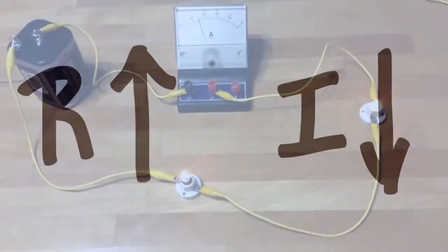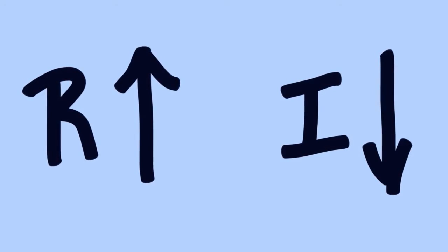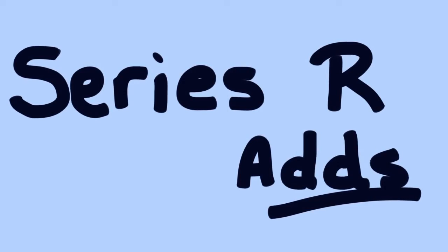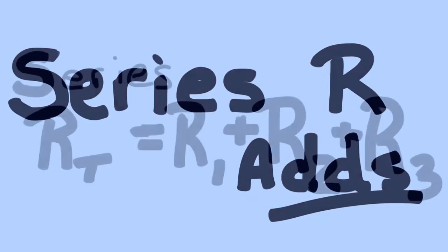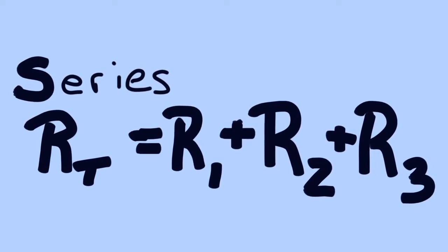That's a series circuit and since the current went down we know that the resistance of the circuit went up. Therefore when you add more resistors in series you add the resistances up and so the equation could look something like this for different resistors in series.